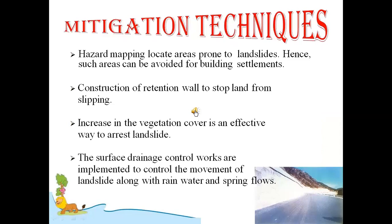Now we will look at mitigation measures or mitigation techniques. Mitigation means the action of reducing the severity. As we learned about landslides, these are natural disasters — we cannot stop them, but we can reduce their severity. For that, we need to use some techniques and take measures to avoid maximum loss of life and property. Hazard mapping locates areas prone to landslides. Such areas can be avoided for building settlements. We should identify places highly prone to landslides and not allow people to settle there.